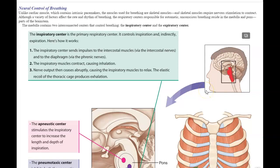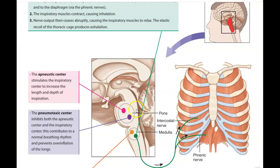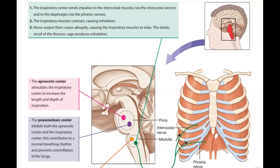Breathing requires skeletal muscle stimulation. Since skeletal muscles are voluntary, messages must be sent — luckily the brain sends them automatically based on stimulus from the inspiration center, located in the medulla oblongata and the pons. These structures send impulses to the intercostal muscles and the diaphragm, causing inhalation. The nerve output then ceases abruptly, causing the inspiratory muscles to relax, and the elastic recoil of the thoracic cage causes exhalation.